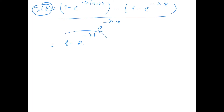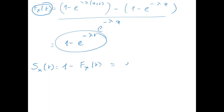Then you find that the survival function sxt is given by 1 minus the distribution function, which gives you e to the power minus lambda t. You can see that the survival function of an x-years-old is the same as the survival function of a 0-years-old.